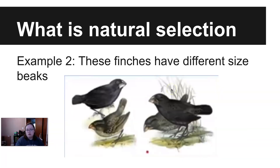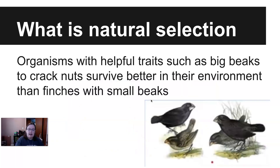Darwin also looked at finches and noticed they have different size beaks — some really big, some really small, some really long, some really short. Those beaks corresponded to the food that the birds ate. If a bird was on an island where big nuts or large seeds were the food source, the birds with the biggest beaks were the ones that survived and reproduced, whereas birds with really small beaks weren't able to crack the nuts or eat large seeds. So the available food drove what type of beaks the birds would have.